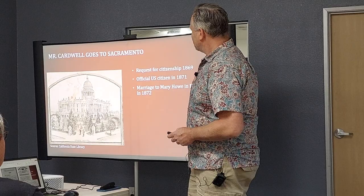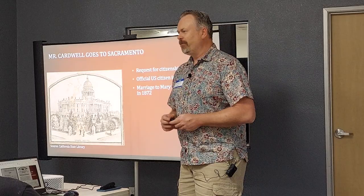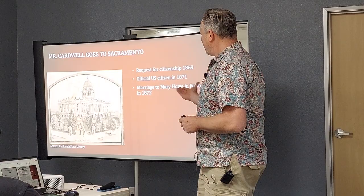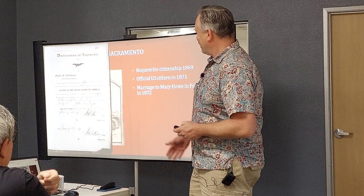He gets to Sacramento, and very quickly in 1869 he shows up registering for citizenship. He gets his citizenship papers in 1871 and shows up with a marriage license in 1872 in Folsom. He's in a bit of a hurry - he moves right in, settles in, and gets things going.